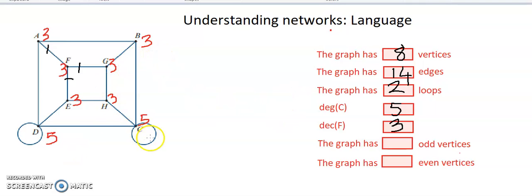So far, if I look at this, we've got 1, 2, 3, 4, 5, 6, 7, 8. The graph has 8 odd vertices and 0 even vertices.